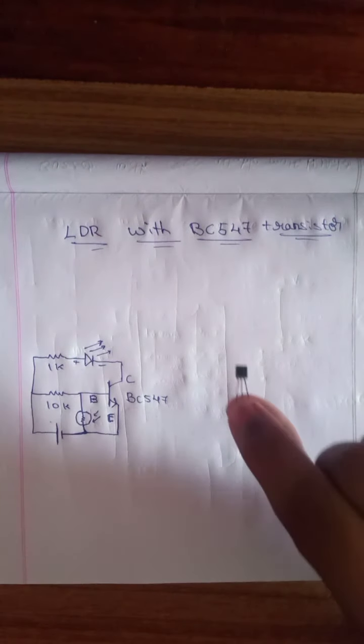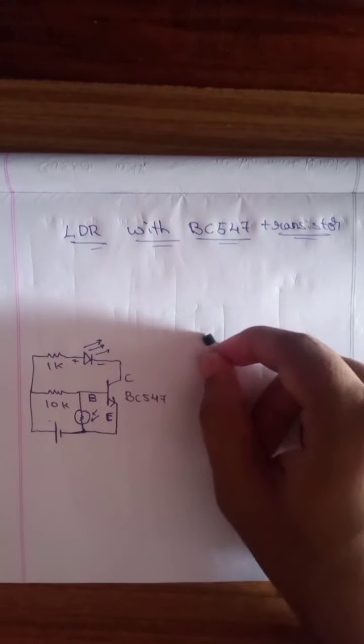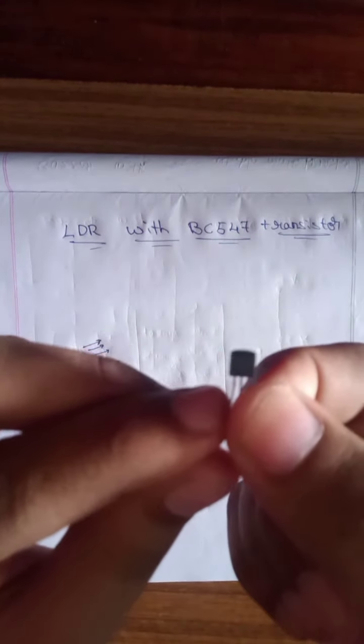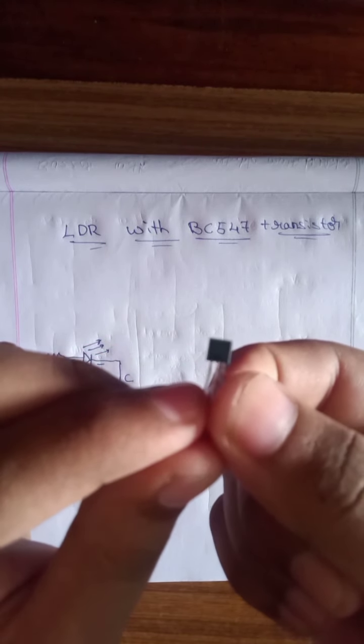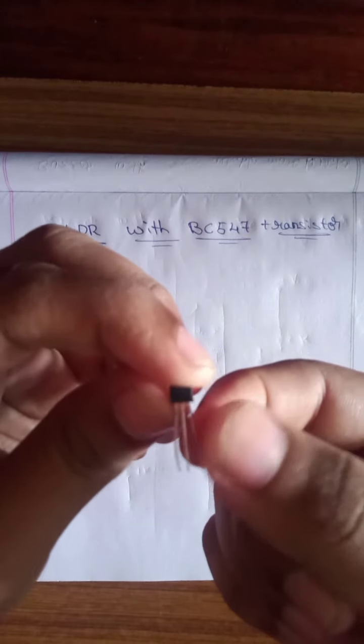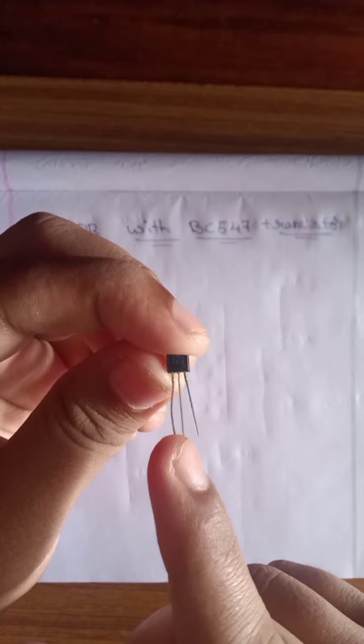First of all, take a BC547 transistor. This transistor, the naming of the transistor - please note that the name of the transistor should face towards you and the terminals are named like this: Collector, Base, Emitter.